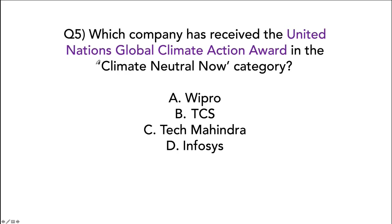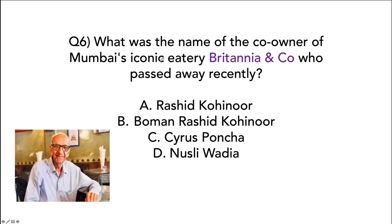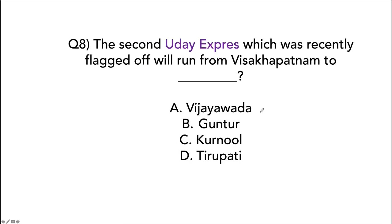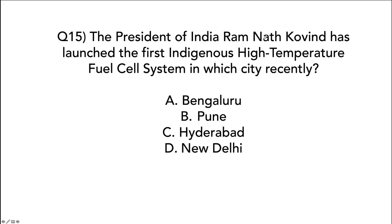Infosys received the United Nations Global Climate Action Award in the Climate Neutral Now category. Boman Rashid Kohinoor, co-owner of Mumbai's iconic eatery Britannia & Co. and a freedom fighter, passed away. The second Uday Express train will run from Visakhapatnam to Vijayawada in Andhra Pradesh. President Ramnath Kovind launched the first indigenous high-temperature fuel cell system, developed by CSIR, at Vigyan Bhavan in New Delhi.